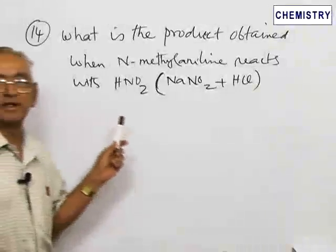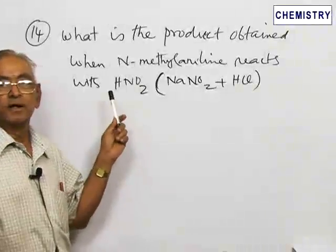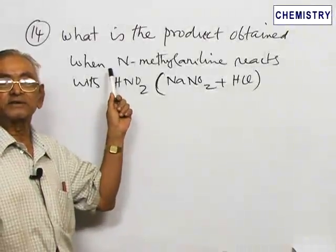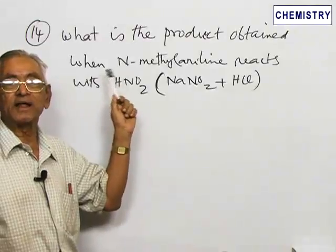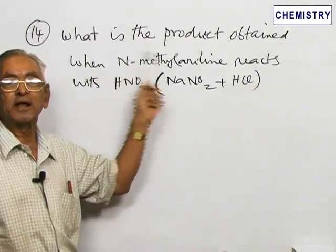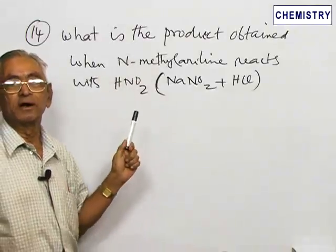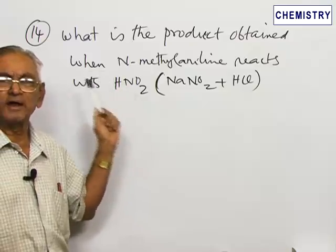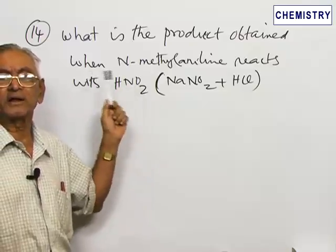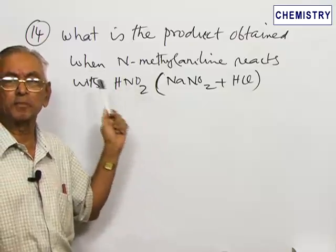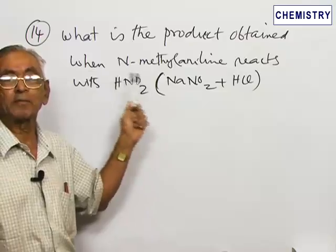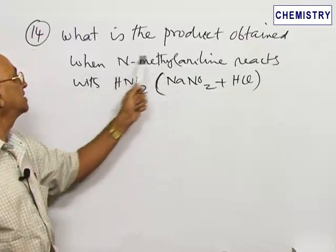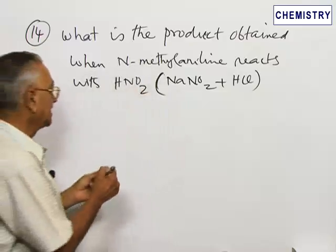As we have seen in the earlier question, we have seen the reactions of N,N-dimethyl aniline, which is an aromatic tertiary amine. Now we are looking at the reactions of one of the very important and characteristic typical reactions of an aromatic secondary amine, which is N-methyl aniline.